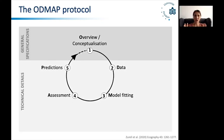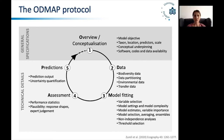The overview or conceptualization section really sets the scene of your modeling exercise. In the OTMAT protocol, this part will contain all the general specifications you need to understand the modeling exercise, while the other four sections contain more technical details necessary to reproduce the technical aspects of the work. The overview contains the model objective, but also information on the taxon, the location, the predictors, the conceptual underpinning, and the availability of software codes and data. The other OTMAT sections — data, model fitting, assessment, and prediction — will contain elements very similar to a lot of the checklist items already introduced.